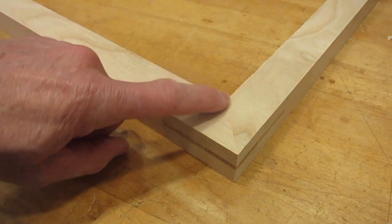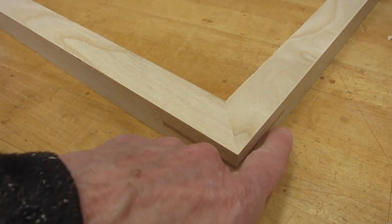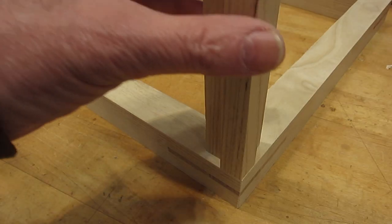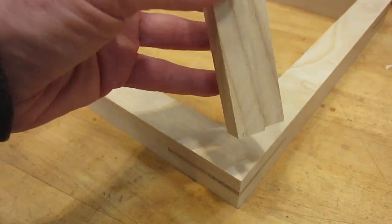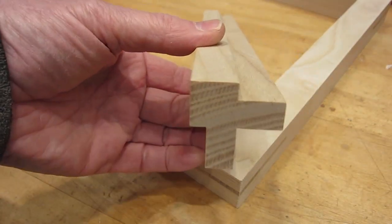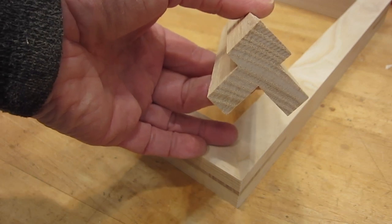The first two pieces are joined with a simple miter corner and a spline to add some strength. The third piece has the same dimensions and I ran it over the table saw a few times to create this profile.